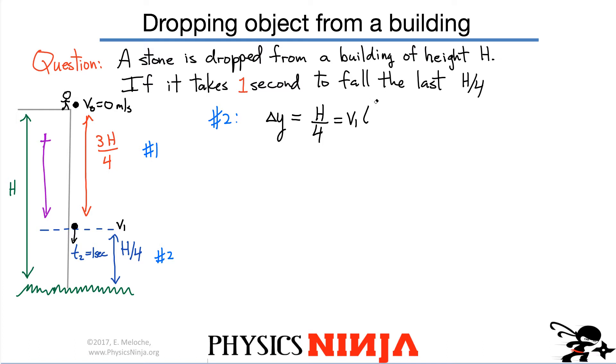Now the initial velocity for part 2 is V1 multiplied by time. In this case, let's just automatically substitute. We know the time. It's 1 second plus 1 half G. And again, it's 1 second and it's squared. So at the end, I can write just an expression for H. I'm going to multiply through by 4 just to get rid of that fraction. And what I get is 4V1 plus 2 times little g.